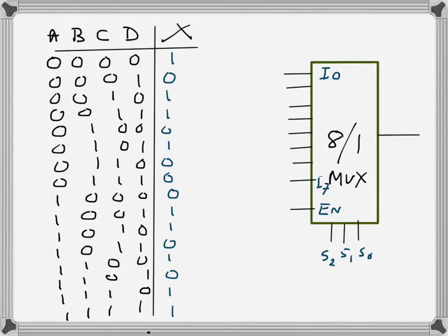I want to implement a four-variable truth table using an 8-to-1 mux. An 8-to-1 mux has 8 inputs, 1 output, and 3 select pins. The 3 select pins select which input goes to the output. When selects are 0, i0 goes to the output. For example, when S2=0, S1=1, S0=1, i2 goes to the output. The select pins select which input goes to the output.